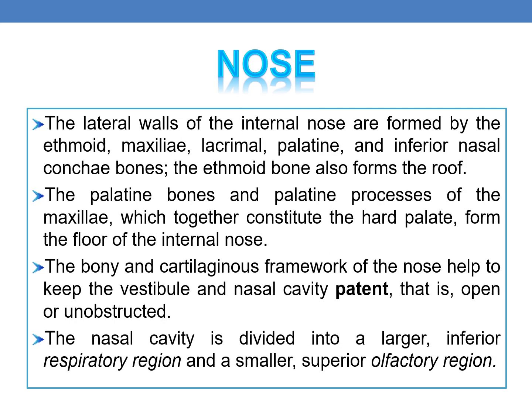The lateral walls of the internal nose are formed by the ethmoid, maxillae, lacrimal, palatine, and inferior nasal conchae bones. The ethmoid bone also forms the roof, and the palatine bones and palatine processes of the maxillae, which together constitute the palate, form the floor of the internal nose. Important point: the ethmoid bone forms the roof of the internal nose, whereas the hard palate, composed of palatine bones and palatine processes, forms the floor.